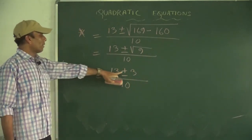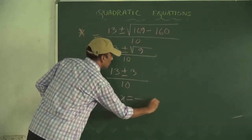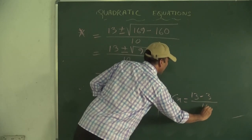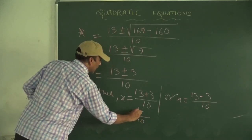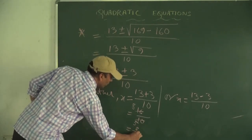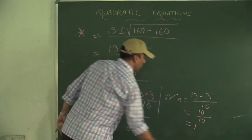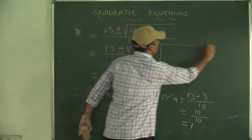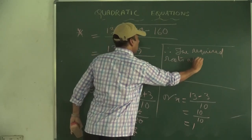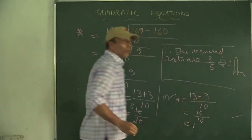Therefore, either x = (13 + 3)/10 = 16/10 = 8/5, or x = (13 - 3)/10 = 10/10 = 1. So once again we have got the same answer, 8/5 and 1.